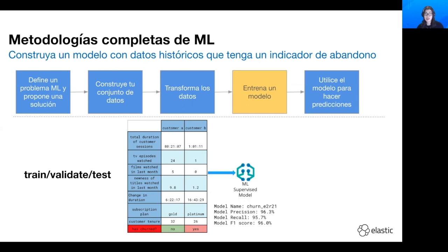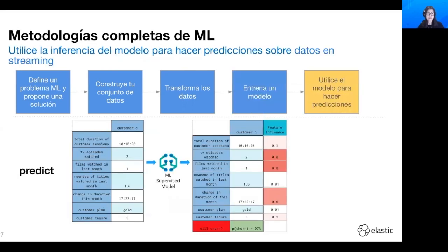Este modelo puede después evaluar a los futuros usuarios y ver la probabilidad de que ese usuario abandone el servicio. Podemos ver qué función, como el total de horas vistas o la cantidad de programas vistos, es la indicación más alta de que van a abandonar. Luego puedes hacer alertas basadas en eso: si el modelo predice que un usuario tiene gran probabilidad de abandonar, puedes mandar un email, una promoción u otra acción.